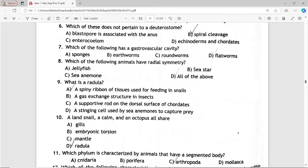Next is: a land snail, a clam, and an octopus all share. Options are gills, embryonic torsion, mantle, radula. Answer is option D, radula.